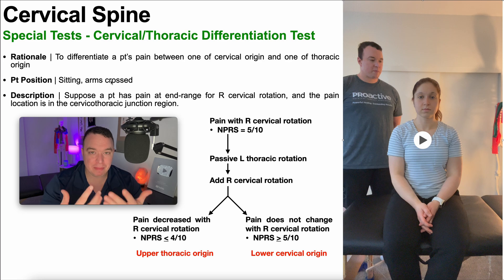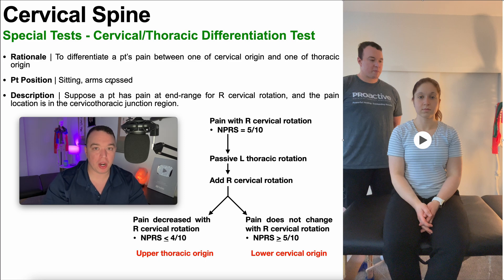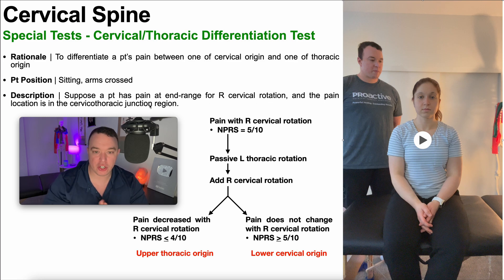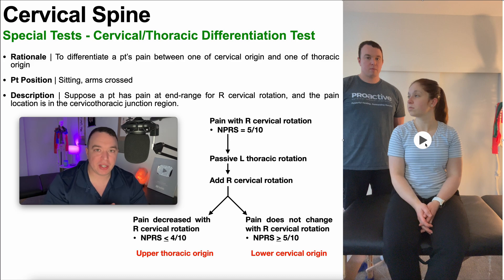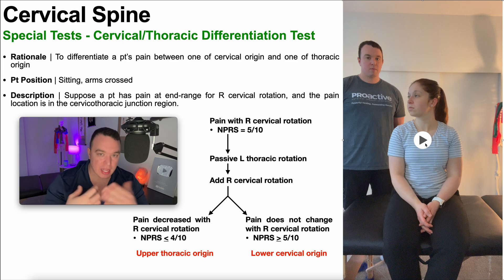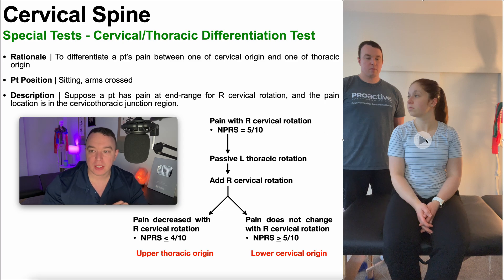To really understand this test, we need a specific example. The patient may have pain localized at the CT junction, and that pain is brought on by right cervical rotation. We have a patient with pain at end range of right cervical rotation around the CT junction. We first simply have the patient rotate their neck to the right, at least to the point where they get that pain. If they're in the neck pain with mobility deficit category, it's probably near end range; if it's more of a whiplash presentation, it may be throughout the entire range. Either way, we want to get a pain rating — let's suppose it's five out of ten.